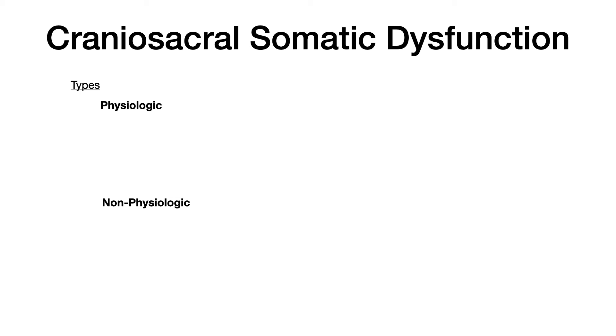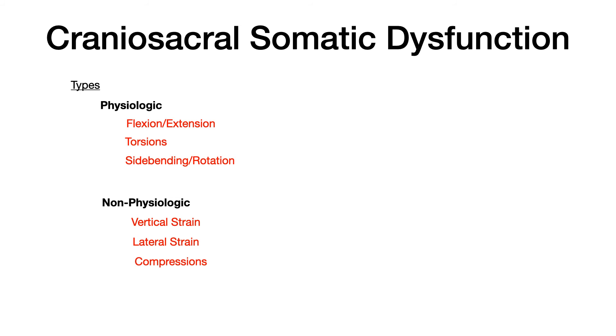Now that you understand craniosacral flexion versus extension, let's talk about craniosacral somatic dysfunction. There are two types of craniosacral motions: physiologic motions and non-physiologic motions. Physiologic or normal motions include craniosacral flexion/extension, torsions, and side bending/rotation. Non-physiologic craniosacral motions include vertical and lateral strains, as well as compressions. We already covered flexion and extension, so let's go through the remaining elements and identify what you need to know.